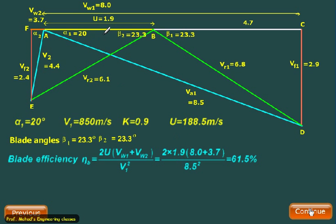And I will use this value in centimeters only, so cm and cm will get cancelled. So u is equal to 1.9, Vw_1 is 8, Vw_2 is 3.7, and V_1 is equal to 8.5 squared. So blade efficiency comes out to be 61.5 percent.